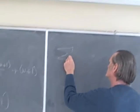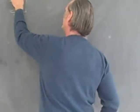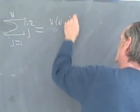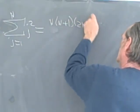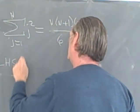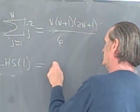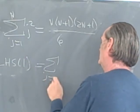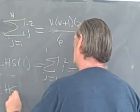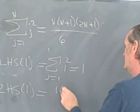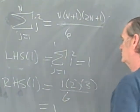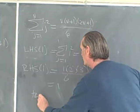Now let's look at the next identity: we want to show the sum from j equals 1 to n of j squared equals n times (n plus 1) times (2n plus 1) over 6. At n equals 1, the left-hand side is just 1 squared, which equals 1. The right-hand side is 1 times 2 times 3 over 6, which also equals 1. So it's true at n equals 1.